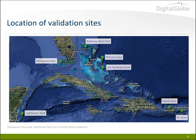Here is the location of the validation sites. Because of local interest, clarity of the water, and access to ground truth data, we decided to perform extensive validation in the Bahamas and Caribbean regions. The five sites on your right-hand side illustrate the currently validated sites: Bahamas West End, Princess Keys, Lee Stocking Islands, Puerto Rico, and St. Croix. The sites on the left are future validation sites.